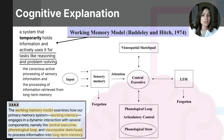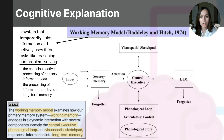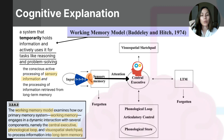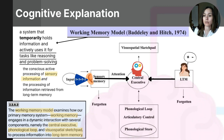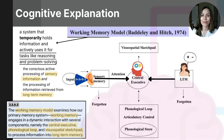Think of it like this: suppose I give you a math problem to solve in your head. Hold this equation in your mind without writing it down: 3 plus 3 plus 5 minus 2. For this task, you are using your working memory. You are taking in the sensory information you heard, holding it, and processing it while also retrieving information from your long-term memory about addition and subtraction. If you did the math problem, you used your working memory and got the number 9.